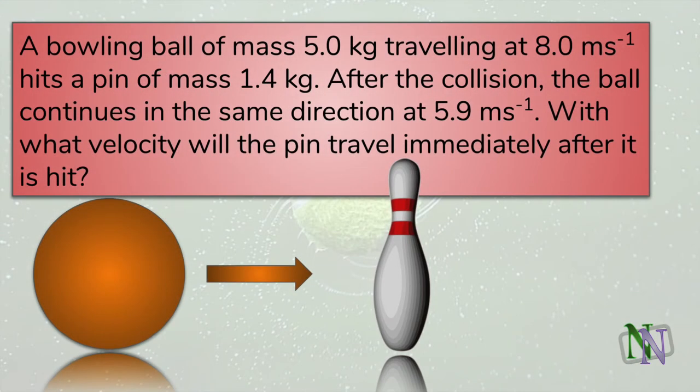Here is an example. The ball transfers some of its momentum to the pin, and in so doing it slows down from 8 to 5.9 meters per second. Their masses are 5 kilograms and 1.4 kilograms.